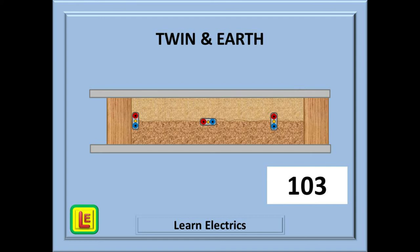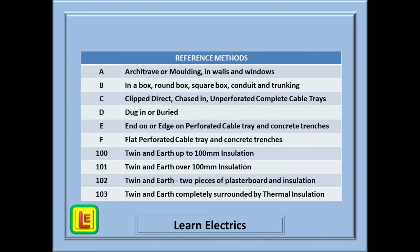They just lay the new insulation over the top of your cables, get a signature from the householder and move on to the next job. Your previously OK cable is now in an insulation sandwich. Now we are going to need a bigger number than the last. How about 103? So, cable completely surrounded by insulation is reference method 103.